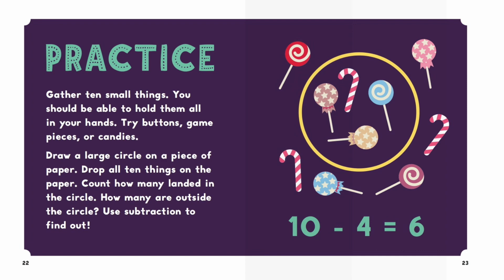Practice. Gather 10 small things. You should be able to hold them all in your hands. Try buttons, game pieces, or candies. Draw a large circle on a piece of paper. Drop all 10 things on the paper. Count how many landed in the circle. How many are outside of the circle? Use subtraction to find out.